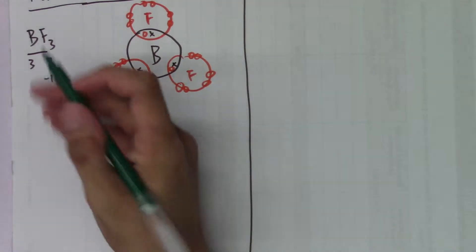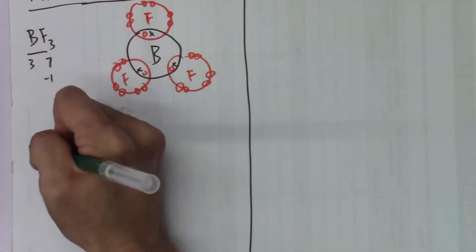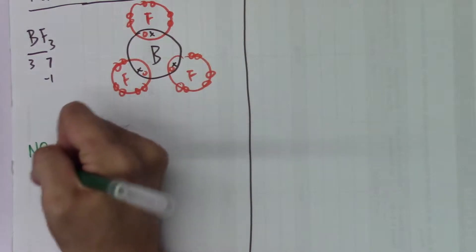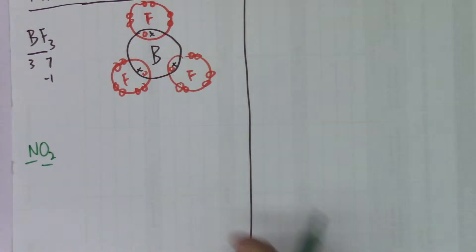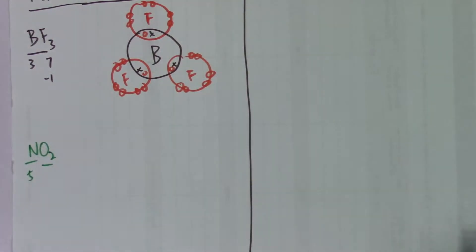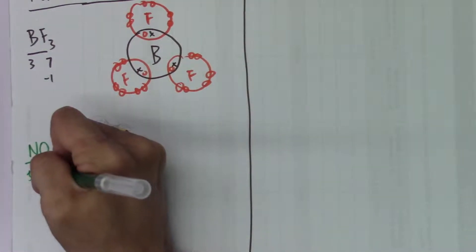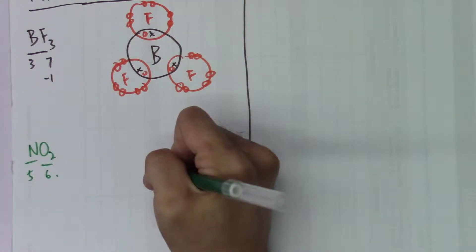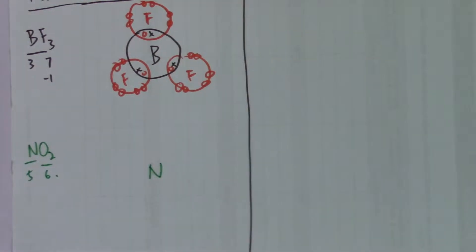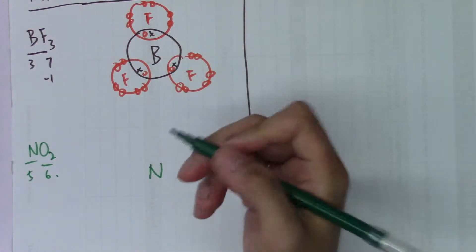Another typical — and actually a funny — example is nitrogen dioxide, NO2. Nitrogen has five electrons on its atom shell, and oxygen has six. Oxygen would like to share two electrons from others, and nitrogen can share a total of five electrons.